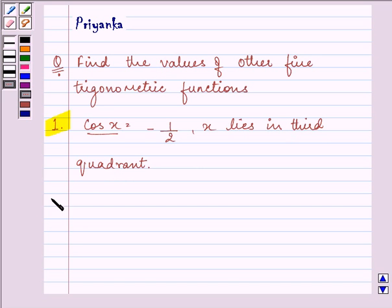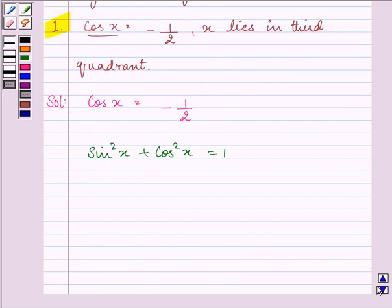So let us start with our solution. Since we are given the value of cos x, we can easily find the value of sin x because we know that sin square x plus cos square x is equal to 1.